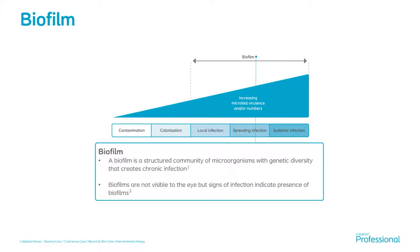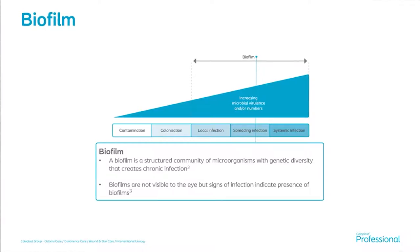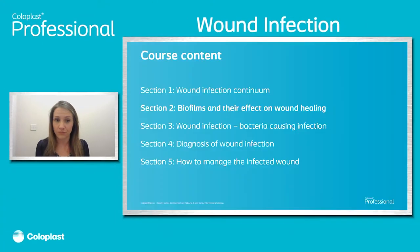Looking at the arrow at the top of the chart, we look at biofilms. Biofilms can be present from the local infection stage right the way through to systemic infection. They're a structured community of microorganisms that create a barrier to healing. Biofilms aren't visible to the eye and can be very difficult to identify — we'll go on to that in a little more detail in the next section.